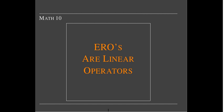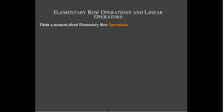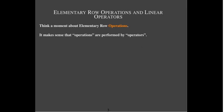In this video we're going to take another look at elementary row operations and show that they are actually linear operators. It's right there in the name — operations. So let's verify that type 1 elementary row operations are indeed linear operators.